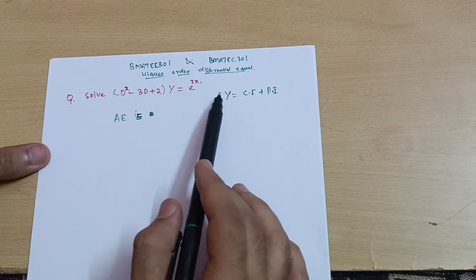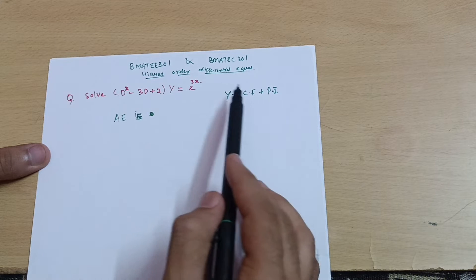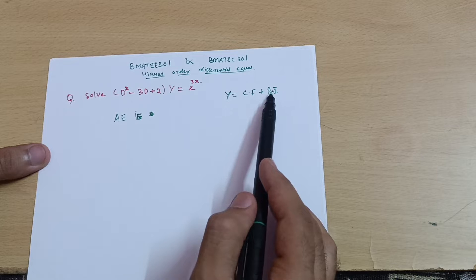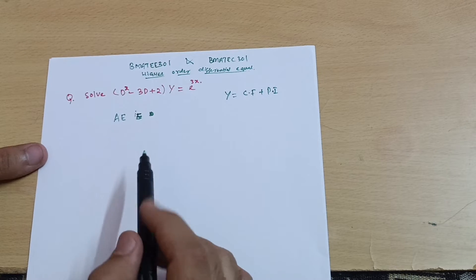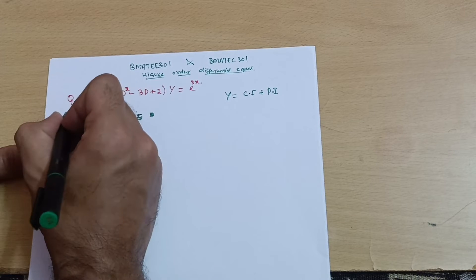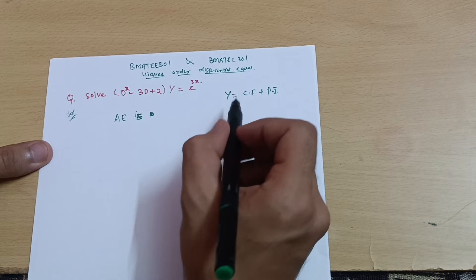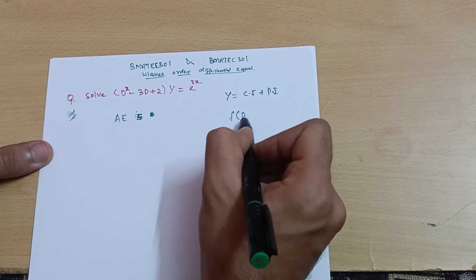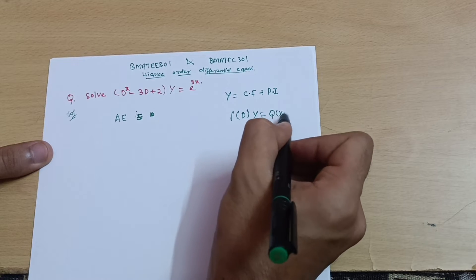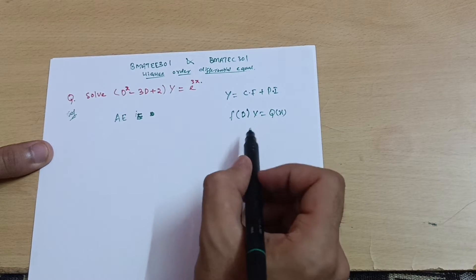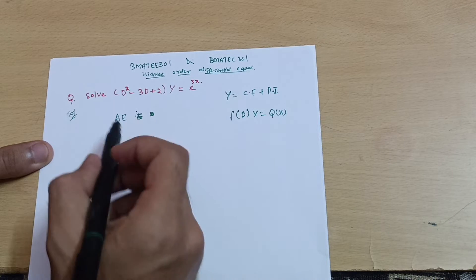This is a higher order differential equation where we need to calculate the general solution. The general solution contains two parts: the complementary function (CF) and the particular integral (PI). The standard form for this higher order ODE is f(D)y = Q(x), where we must calculate both the complementary function and the particular integral.